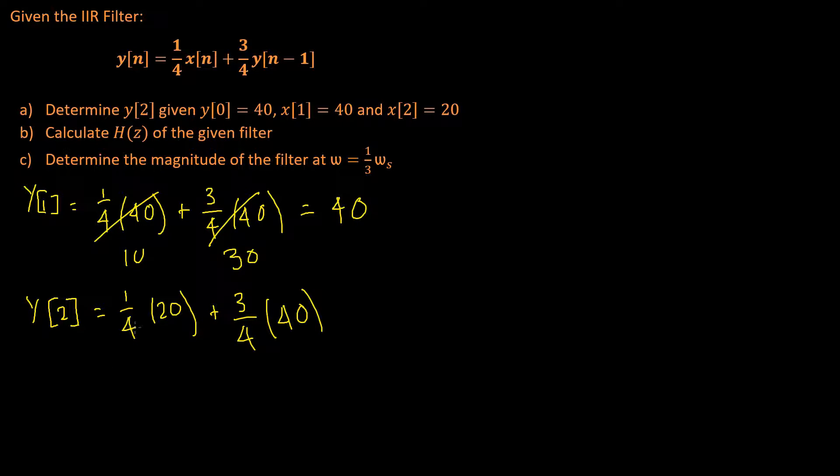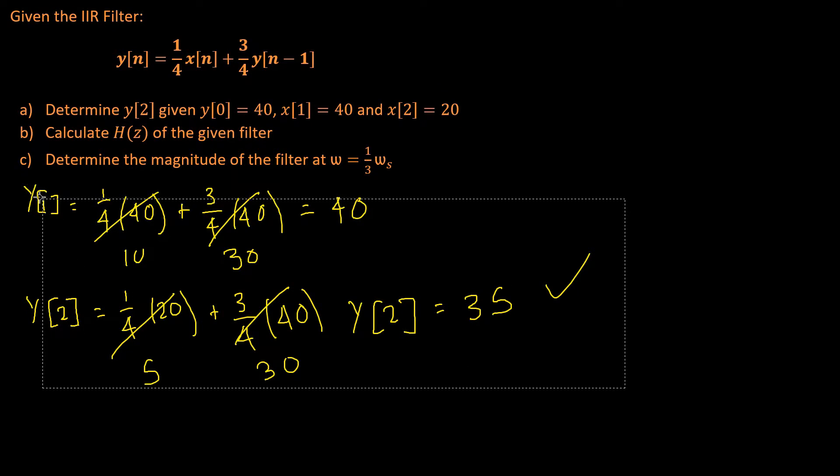Just like before, we can cancel this, this will be 5, and this one will be 30, therefore y of 2 is equal to 35. And that's it, that's part A done. Let's just delete that so we've got some space.